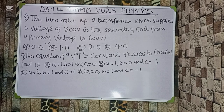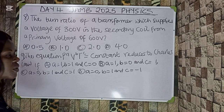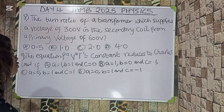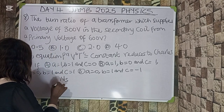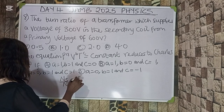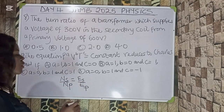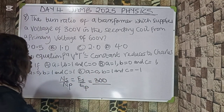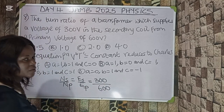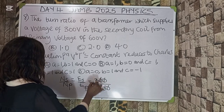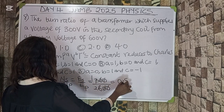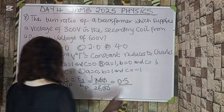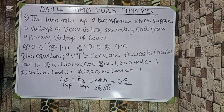Question eight: find the turns ratio of a transformer which supplies a voltage of 300 volts in the secondary coil from a primary voltage of 600 volts. The turns ratio is Nₛ/Nₚ = Vₛ/Vₚ = 300/600 = 1/2 = 0.5. The correct answer is option A.